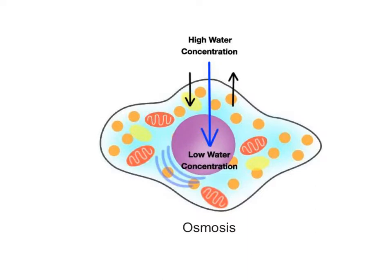So in this cell, the higher water concentration is outside the cell and the lower water concentration is inside the cell. Water is moving in both directions across the membrane, but the net movement of water will be into the cell.